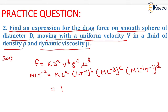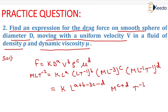The equation becomes K, L to the power A plus B minus 3C minus D, M to the power C plus D, and T to the power minus B minus D. This equals M L T minus 2.